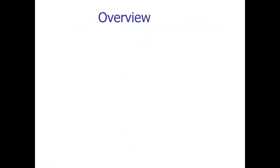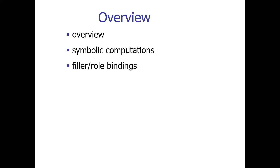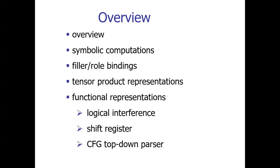I'll give you first a brief overview. I'll start with a summary of basic principles of vector symbolic architectures — what is the sense of symbolic computation — and then come to filler and role bindings for dealing with the decomposition of symbolic structures. Then I'll talk about tensor product representations for mapping symbolic structures onto vector representations. My main topic is functional representations, with three particular examples: logical inference, a simple shift register, and a top-down parser — a recognizer for context-free grammars.